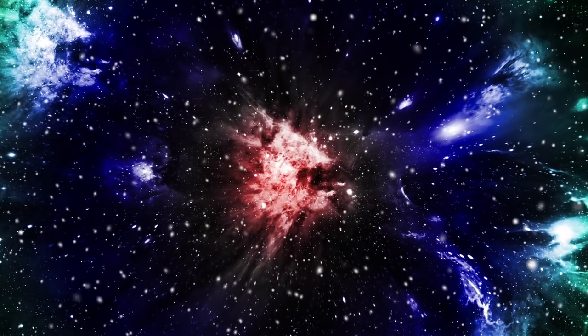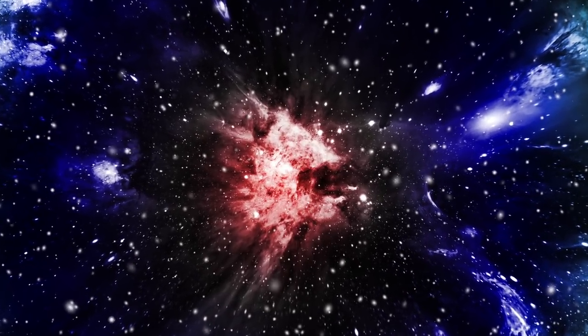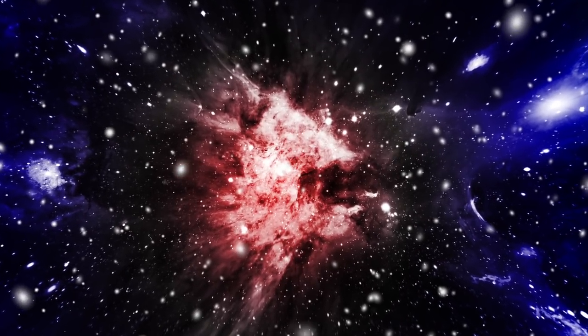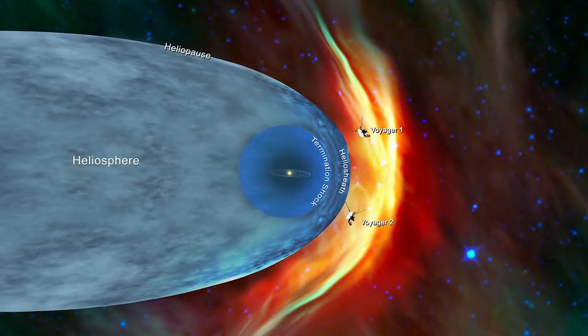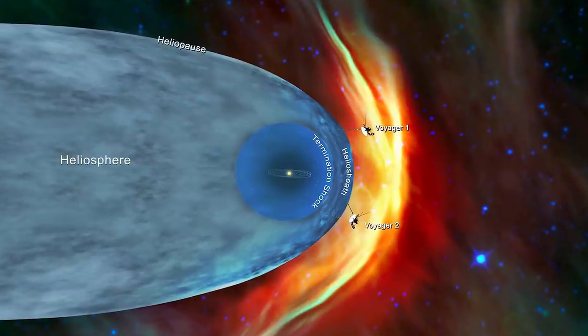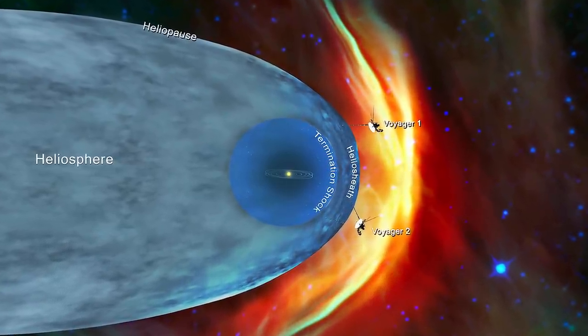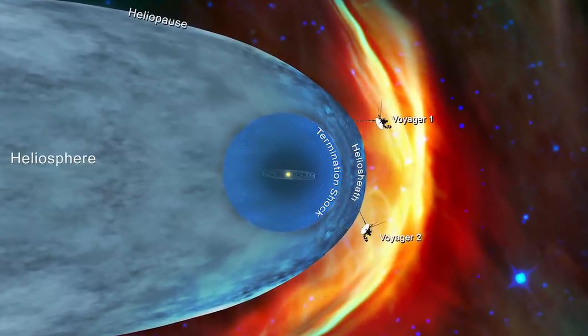The Voyager probes are showing us how our sun interacts with the stuff that fills most of the space between stars in the Milky Way galaxy, said Ed Stone, project scientist for Voyager, and a professor of physics at Caltech. Without this new data from Voyager 2, we wouldn't know if what we were seeing with Voyager 1 was characteristic of the entire heliosphere or specific just to the location and time when it crossed.